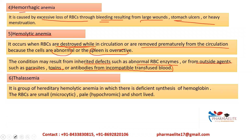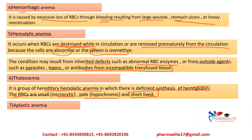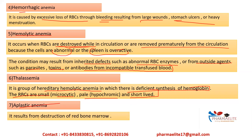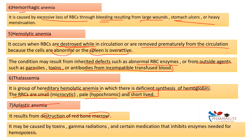Thalassemia is a group of hereditary hemolytic anemias in which there is deficient synthesis of hemoglobin. The RBCs are small (microcytic), hypochromic, and short-lived. Aplastic anemia results from destruction of the red bone marrow. It may be caused by toxins, gamma radiation, and certain medications that inhibit enzymes needed for hematopoiesis. These are the different types of anemias.